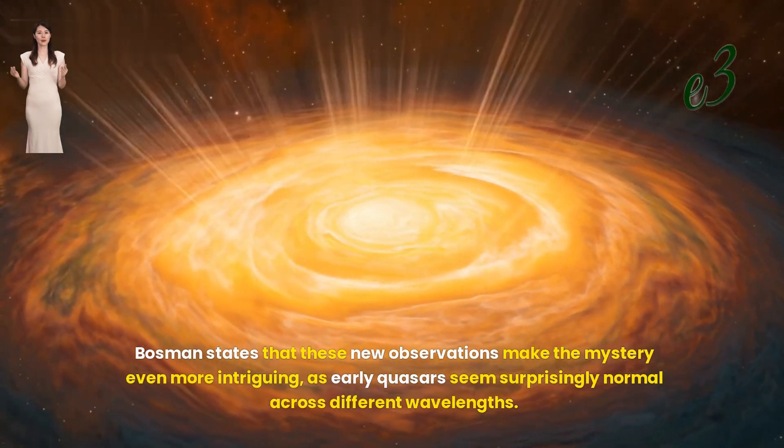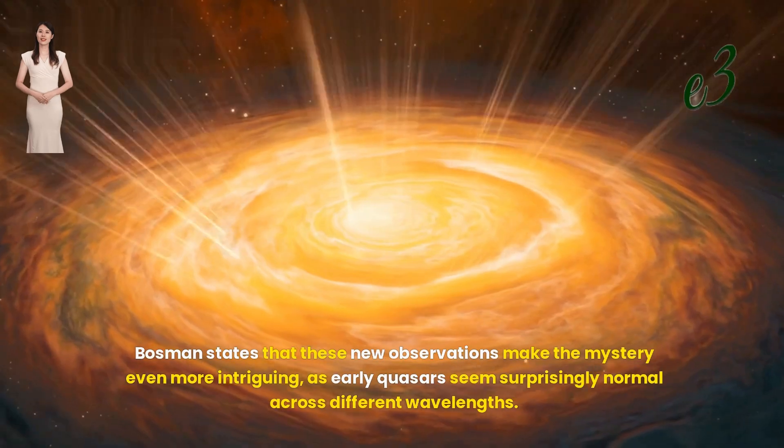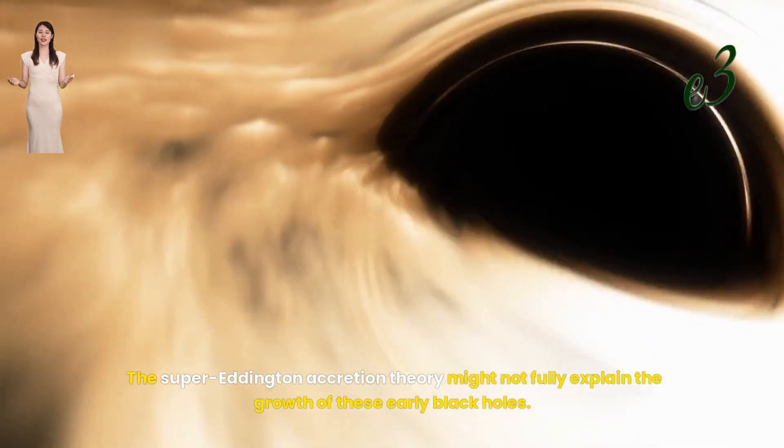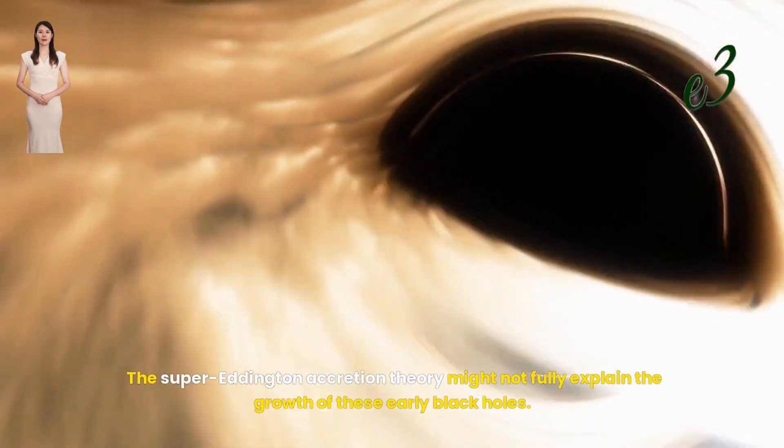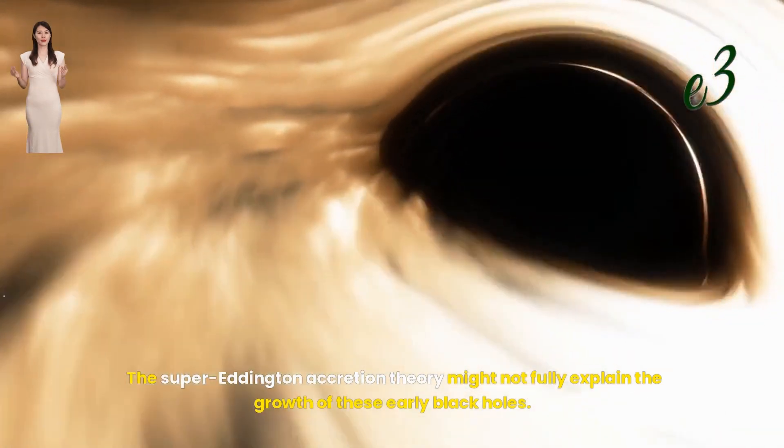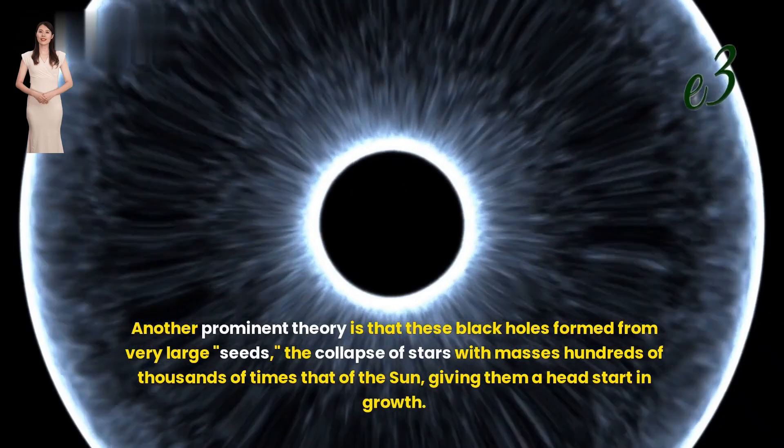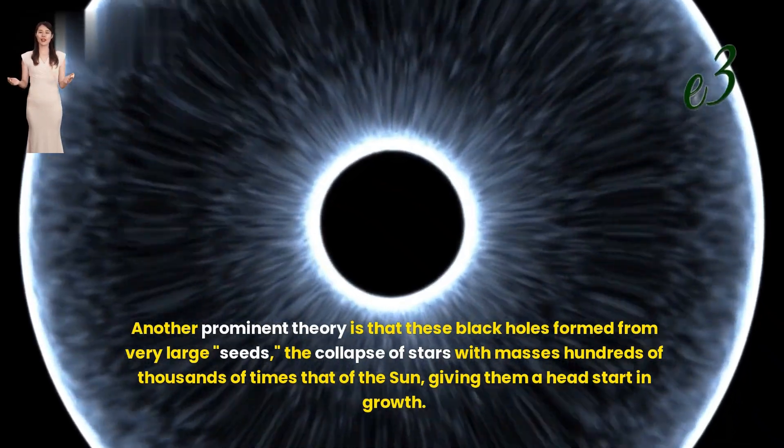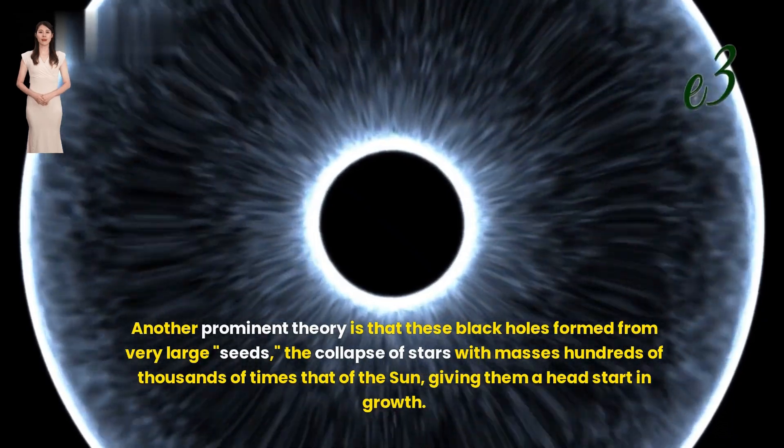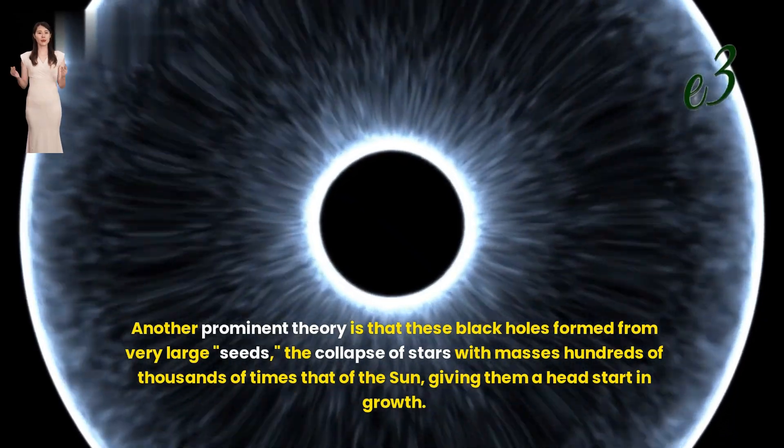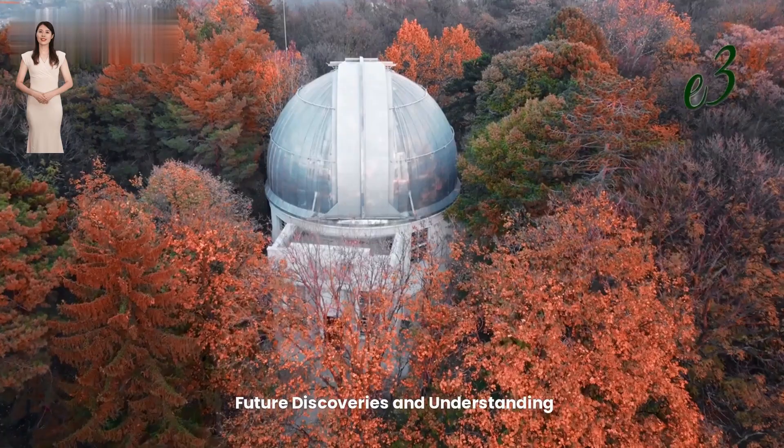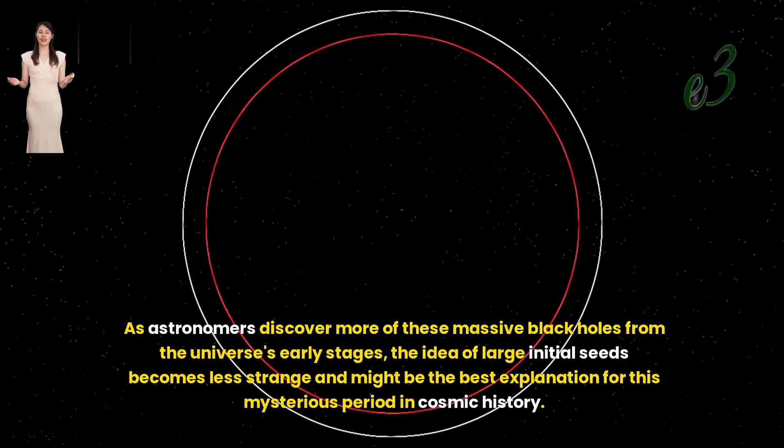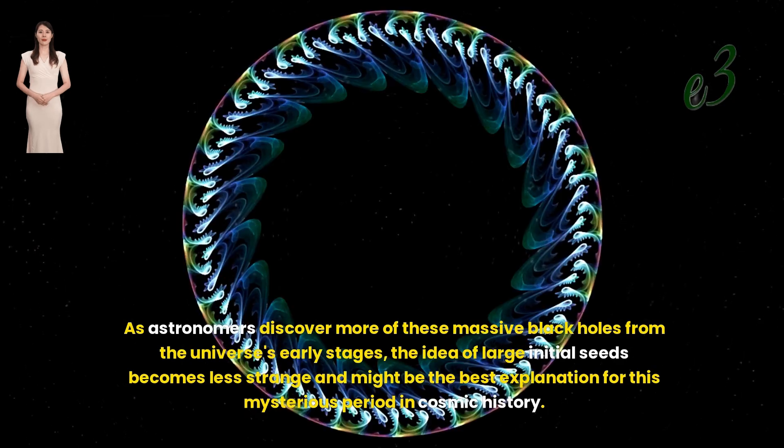Theories on rapid growth. The super Eddington accretion theory might not fully explain the growth of these early black holes. Another prominent theory is that these black holes formed from very large seeds: the collapse of stars with masses hundreds of thousands of times that of the sun, giving them a head start in growth.